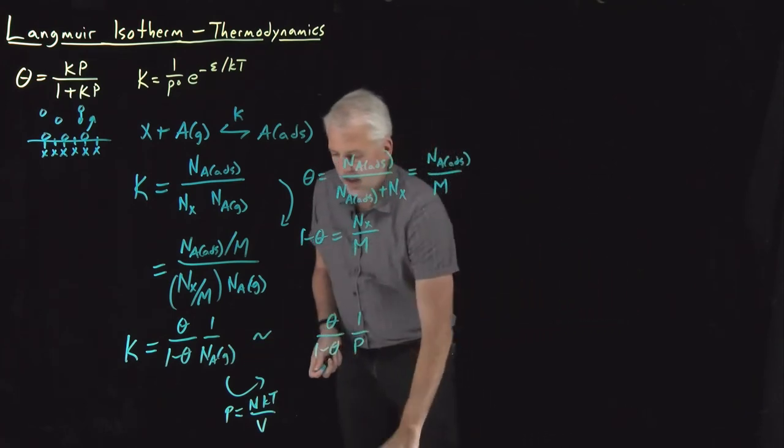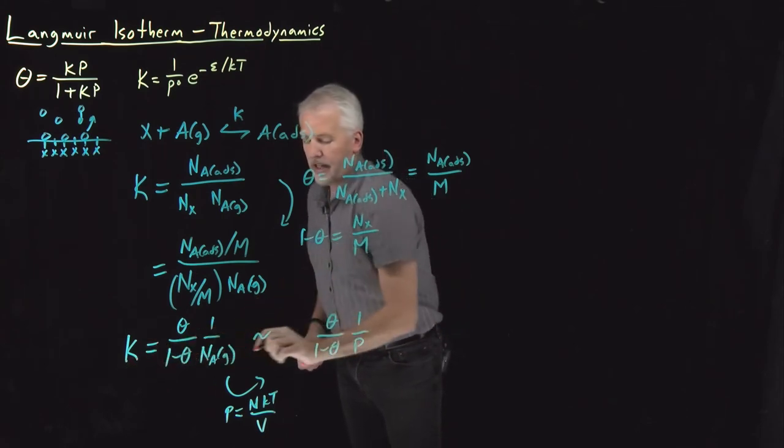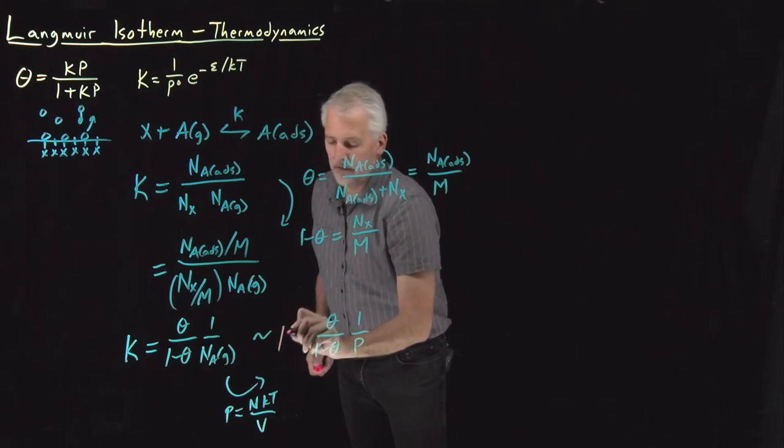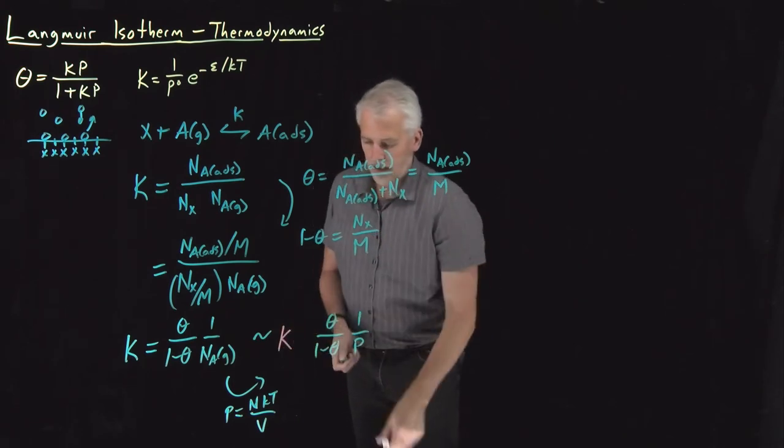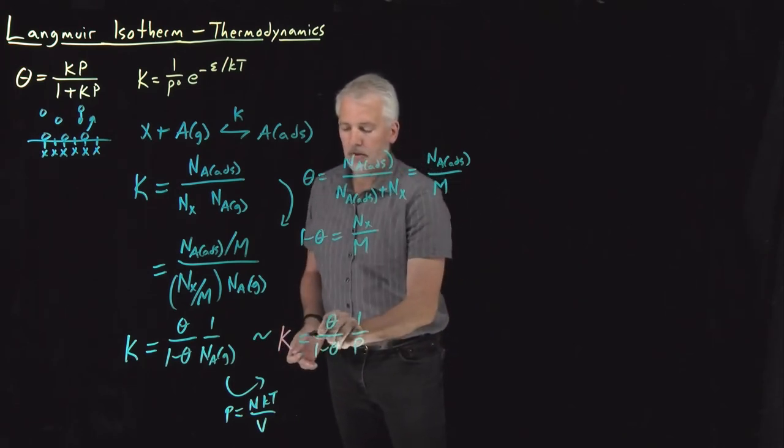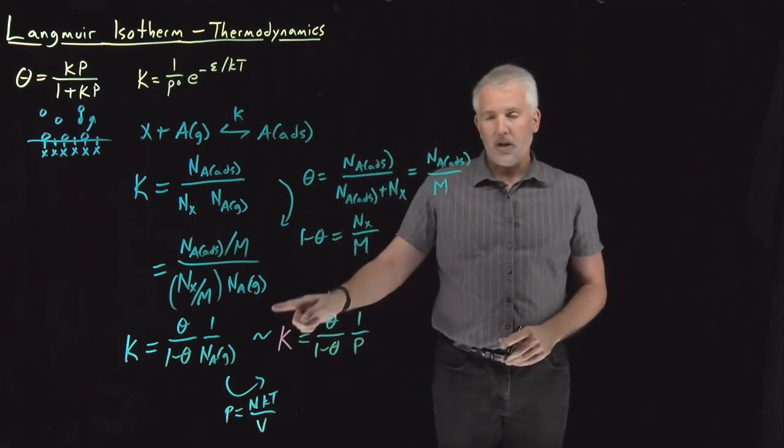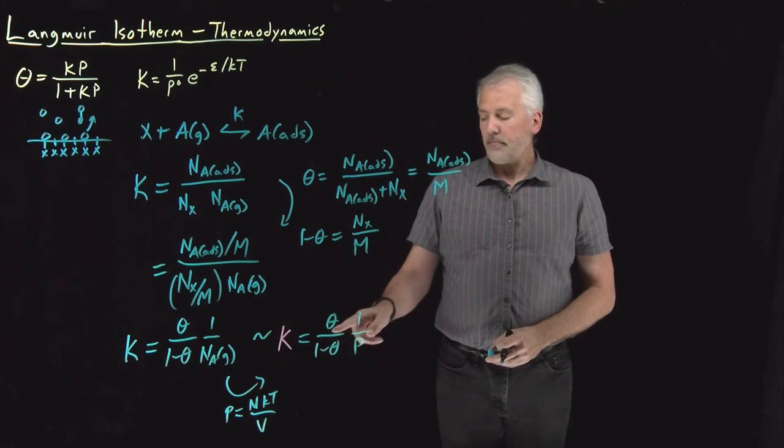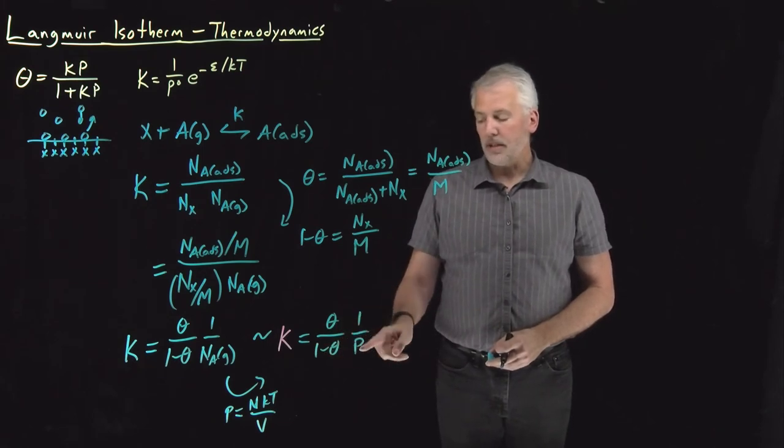maybe an easier way to think about it would be to say this value of K is equal to theta over 1 minus theta times 1 over n, a different value of K. It's still going to be a constant with a different numerical value. So you can call that K prime, or I've just written that as a different color, K is equal to theta over 1 minus theta times 1 over p.